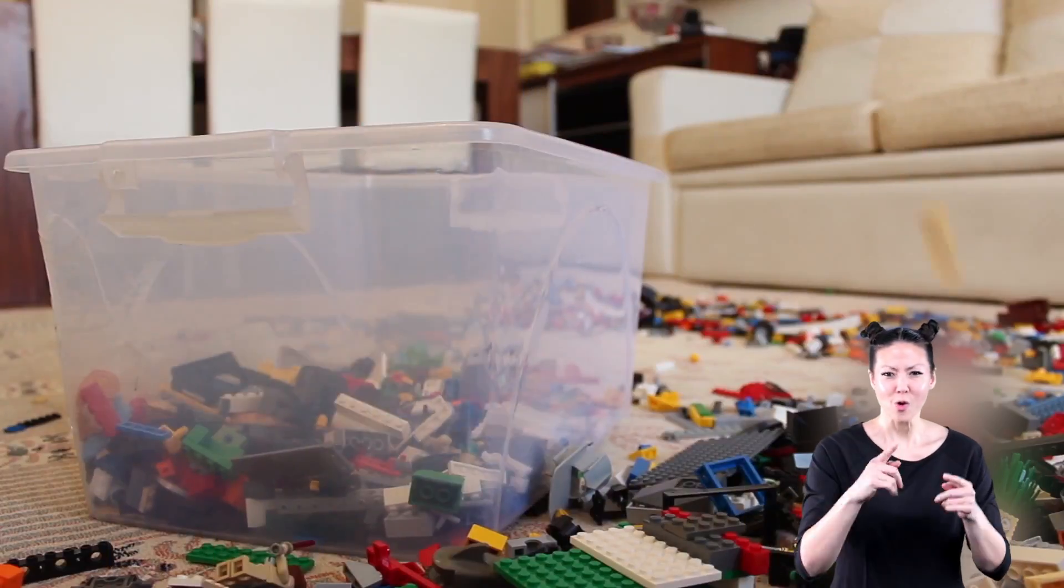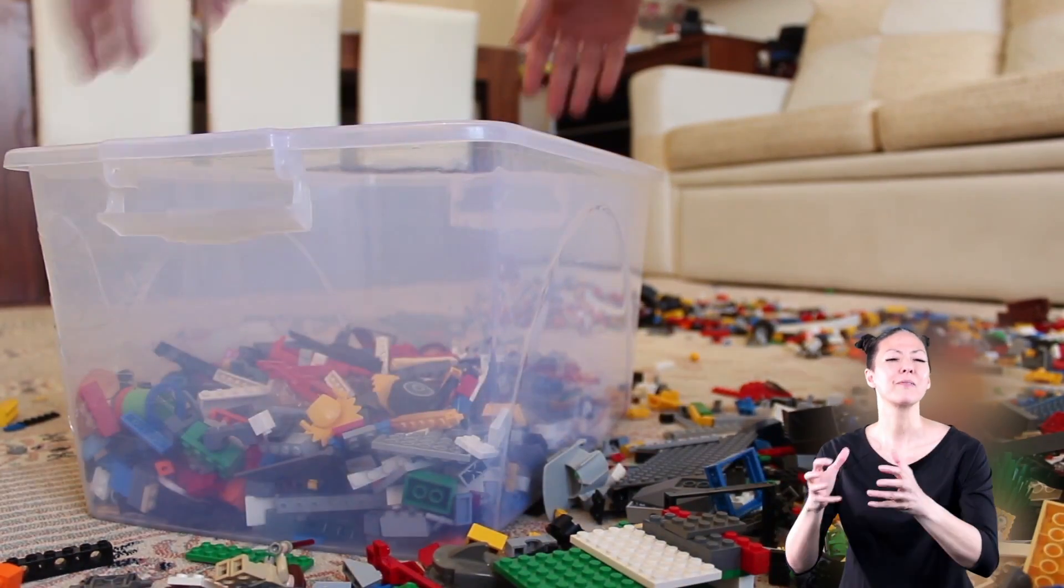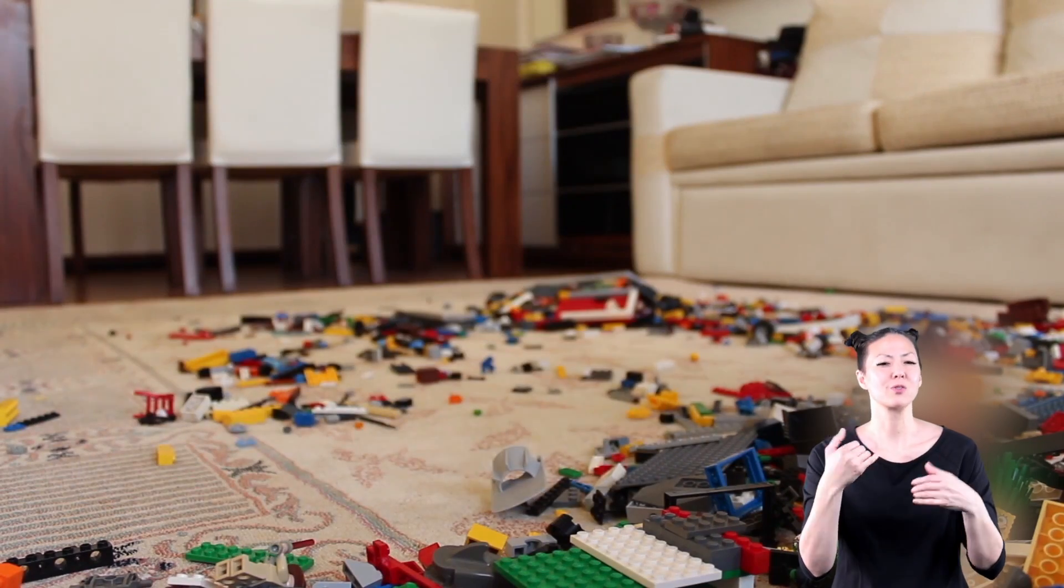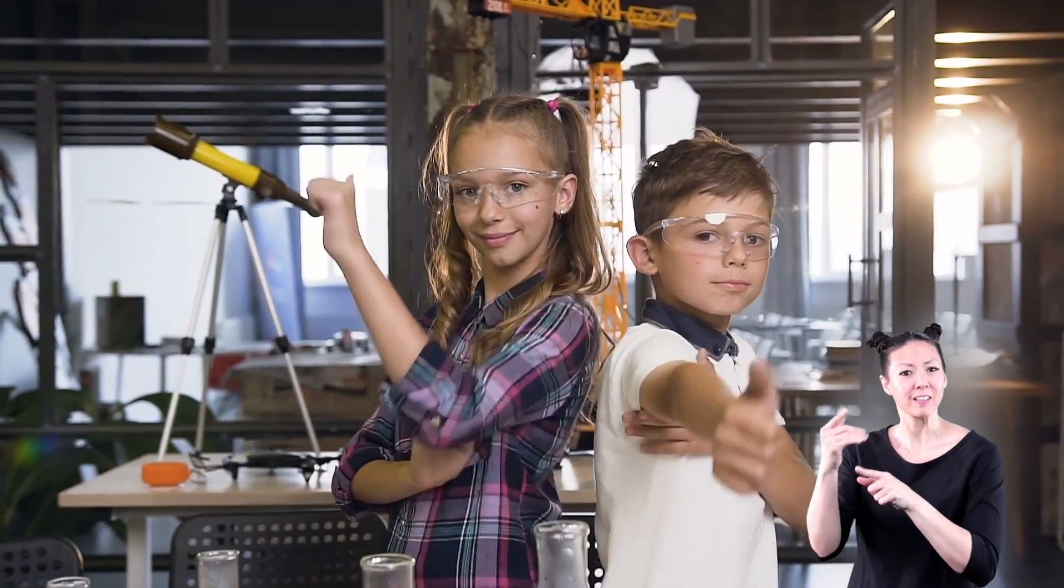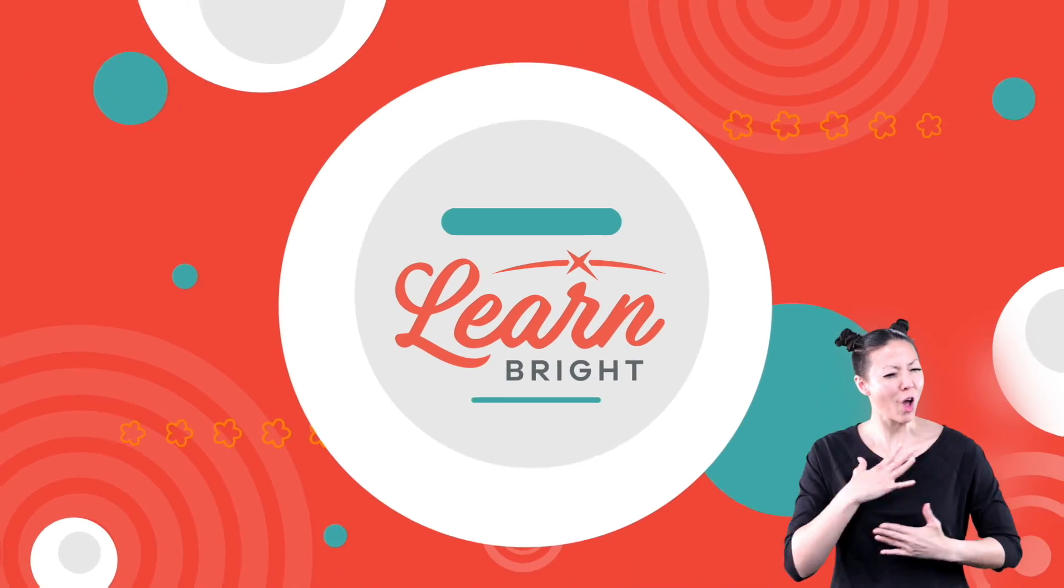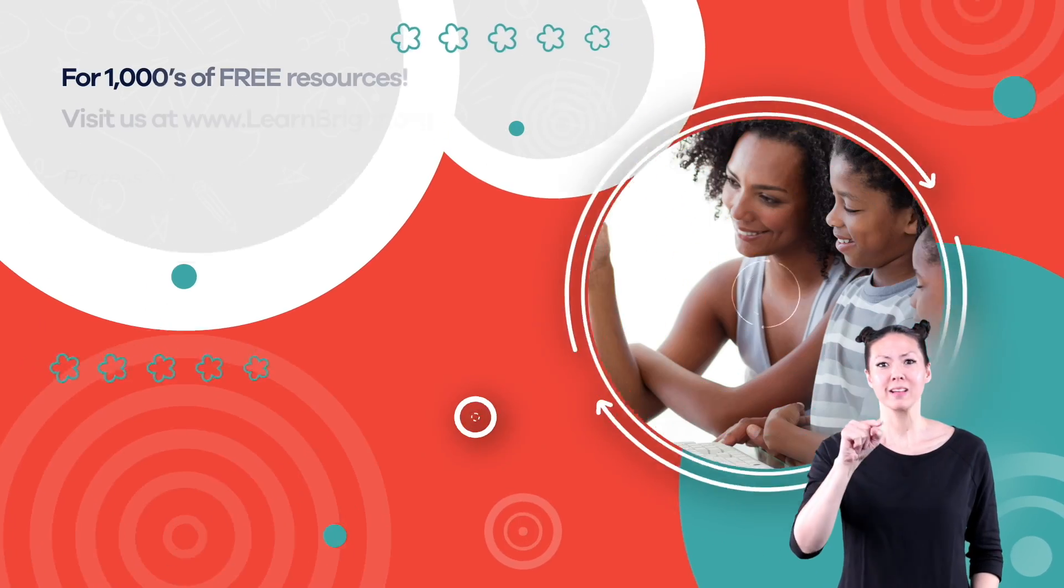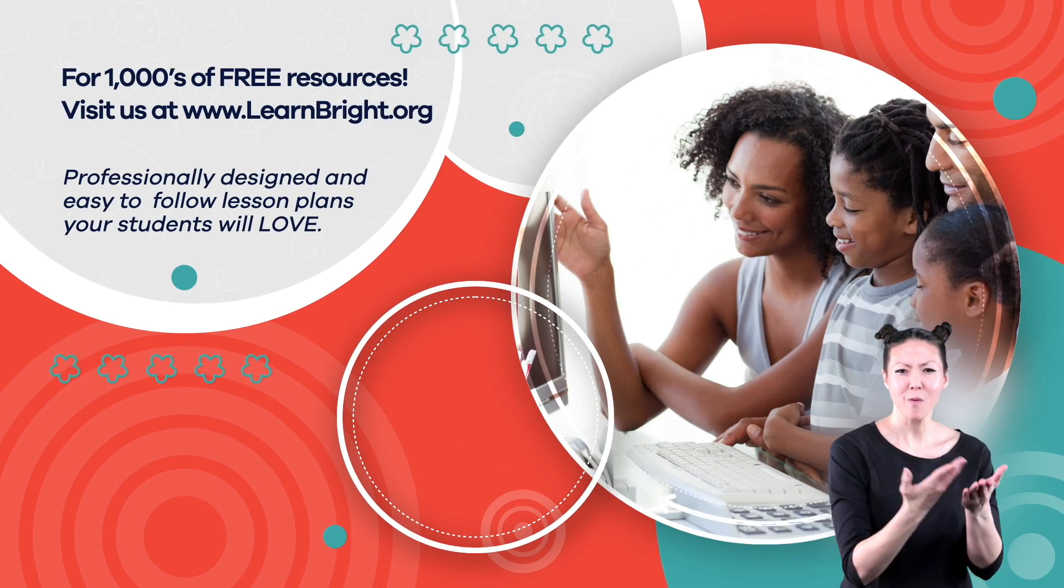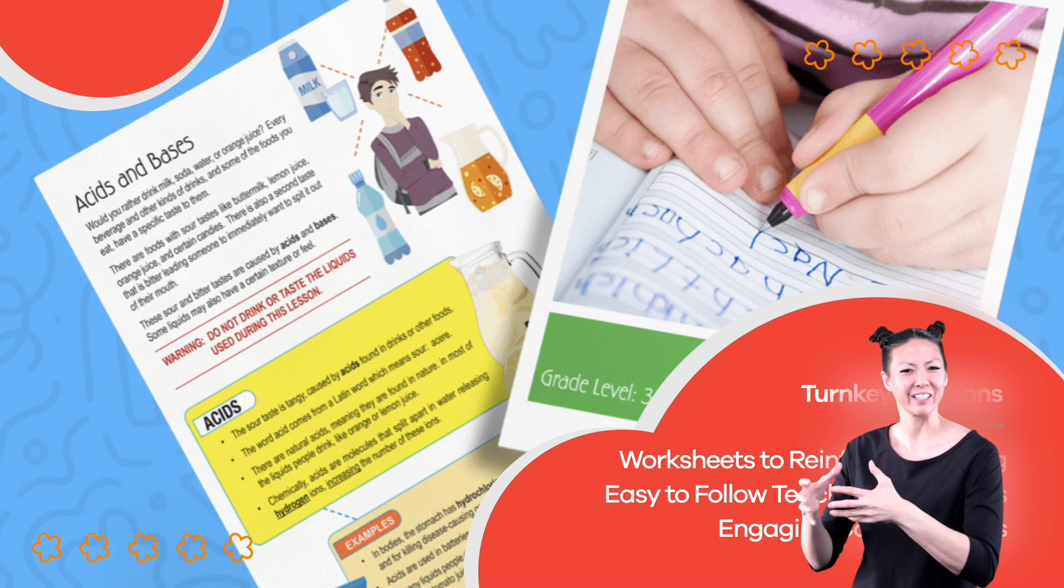So the next time you're organizing your toy room, try using a classification system. It'll make your toys easier to find, and you'll be one step closer to becoming a scientist. Hope you had fun learning with us. Visit us at learnbright.org for thousands of free resources and turnkey solutions for teachers and homeschoolers.